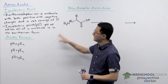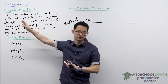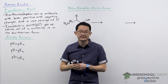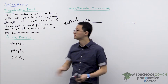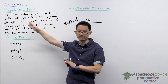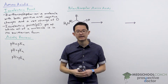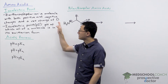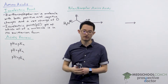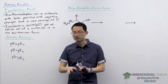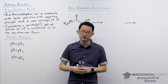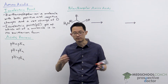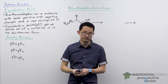A zwitterion, sometimes also called a dipolar ion, is a molecule with both positive and negative charges. However, when you add up the total charges on the molecule, you end up with a net charge of zero. So overall, your molecule has no net charge, but if you look at different parts of the molecule, some parts will have positive charges and other parts will have negative charges.